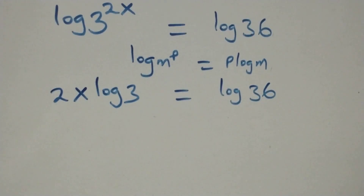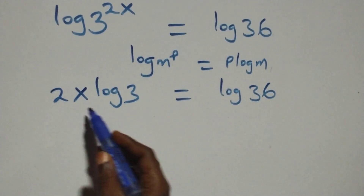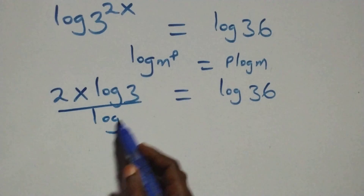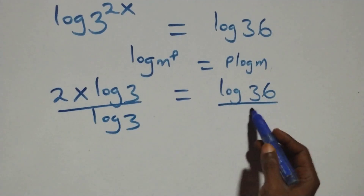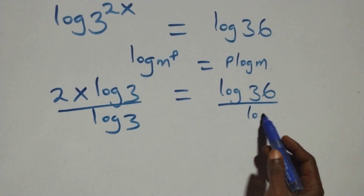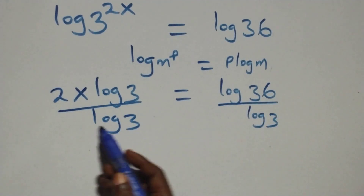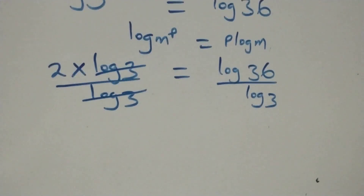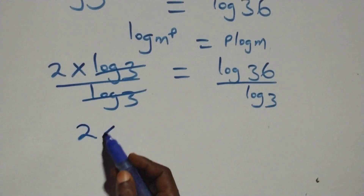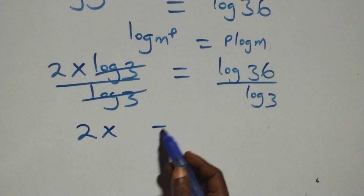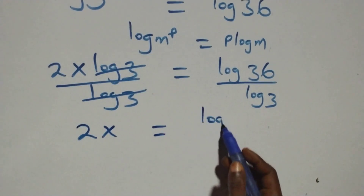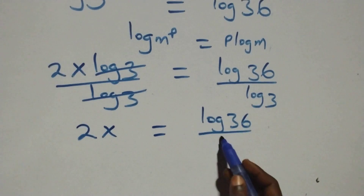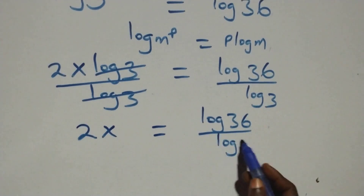Then here we divide both sides by log 3 — that is, divide this side by log 3, and also divide this side by log 3. This implies here log 3 cancels each other. We have 2x equals log 36 over log 3.